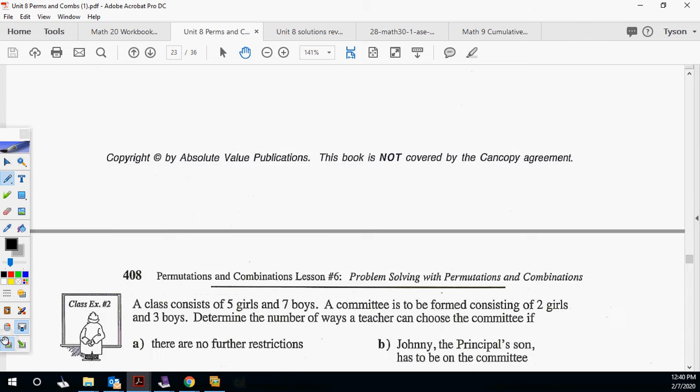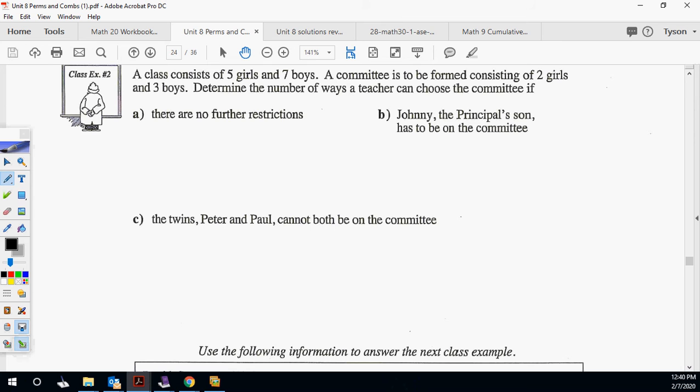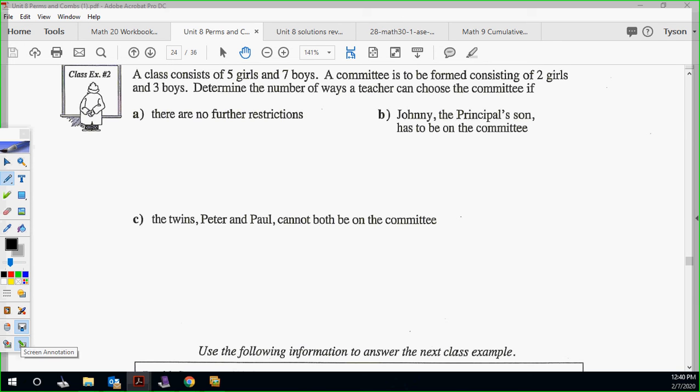A class consists of 5 girls and 7 boys. A committee to be formed consisting of 2 girls and 3 boys. Determine the number a teacher can choose the committee if there's no further restrictions. If we just need girls, 5C2 times 7C3. There's no restrictions. We don't care about order. You get 350.